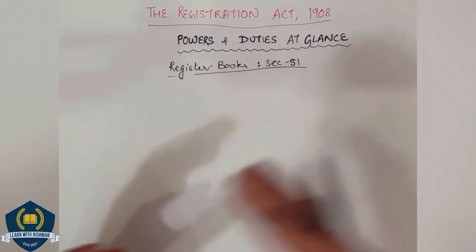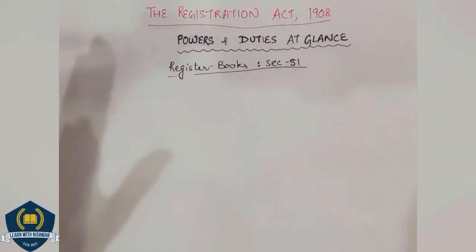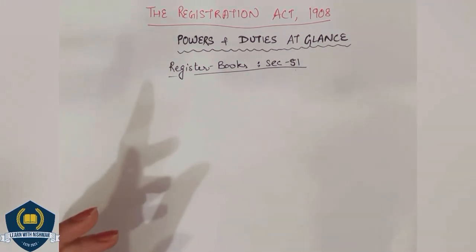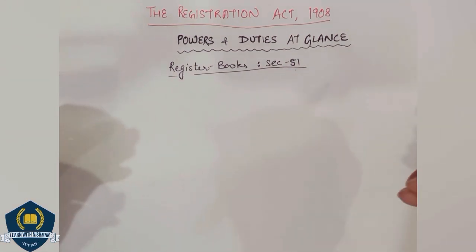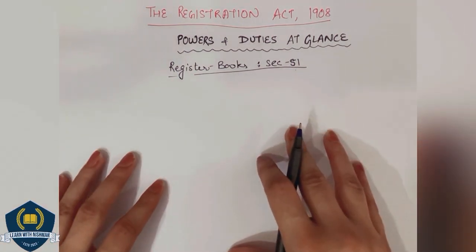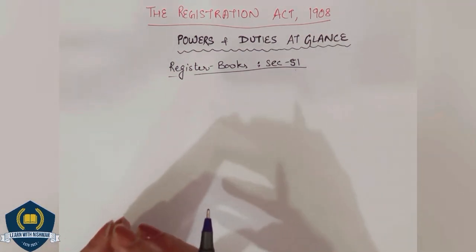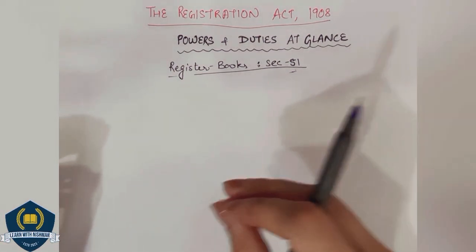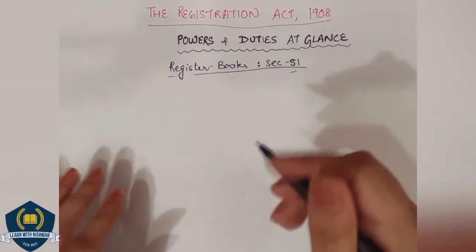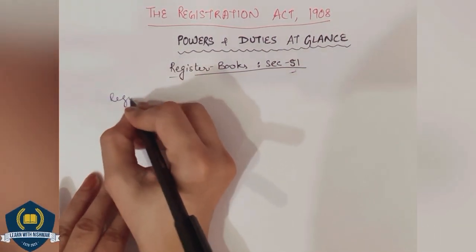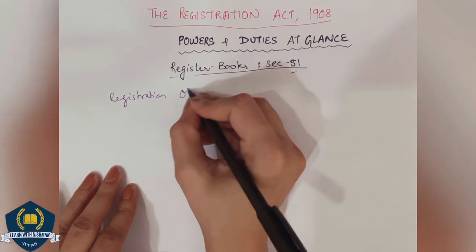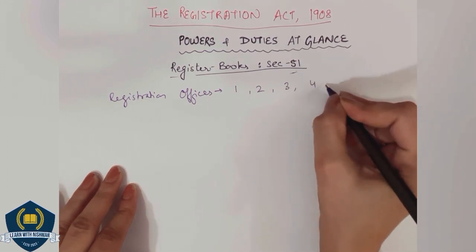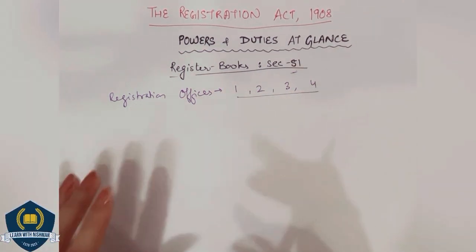There are offices of the registrar, and when we go to get documents registered, they are noted in some book. We have seen several books — book number 1, book number 4, book number 5. So we will see what those books comprise of, and which documents are included in those books. The very first subsection of section 51 talks about books to be kept in several offices. In registration offices, we have book number 1, 2, 3, and 4.